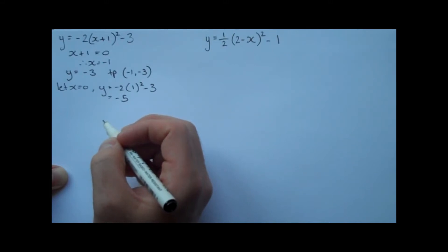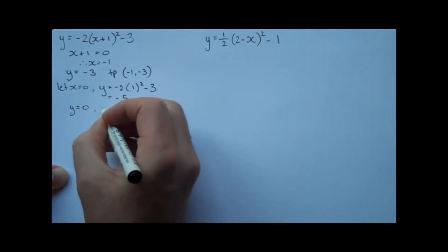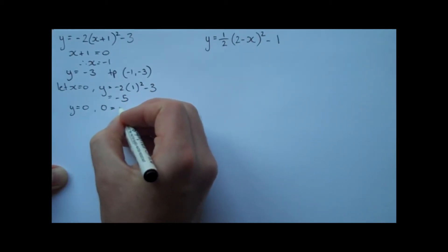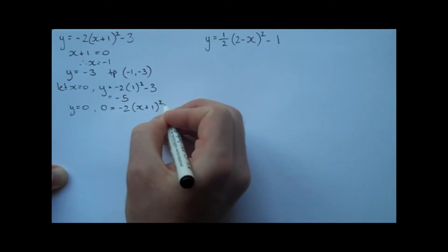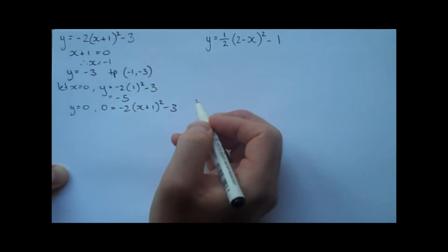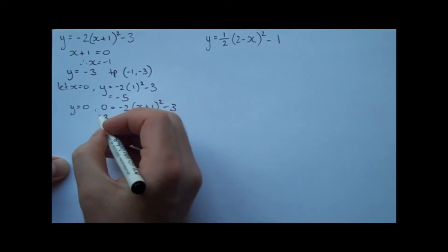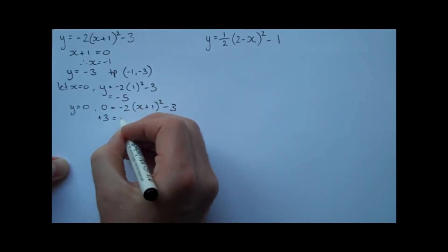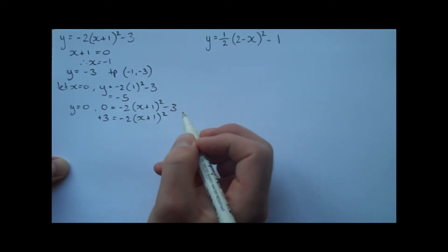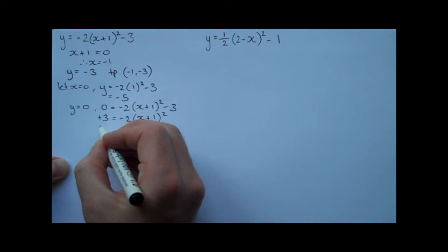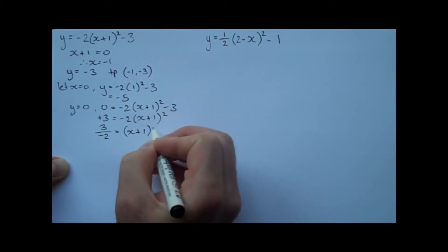Perhaps we want to find the x-intercepts, so we let y equal 0. If we let y equal 0, we get 0 equals -2(x + 1)² - 3. Trying to solve for x here, add 3 to both sides. Add 3 to both sides. And then we also want to divide by negative 2. So we get 3 divided by negative 2 equals (x + 1)².